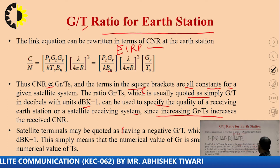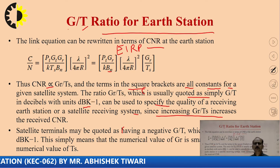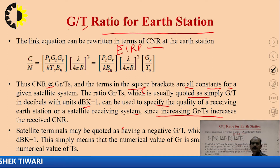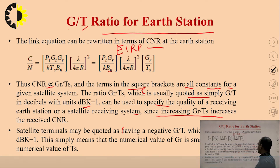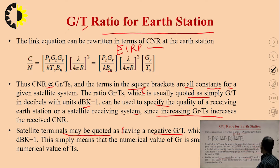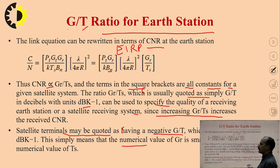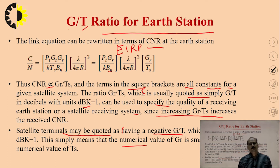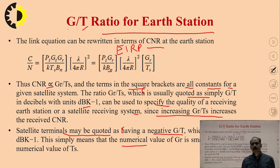Since increasing G/T increases the received CNR, this shows the relationship between G/T ratio and CNR — if G/T ratio increases, the received CNR also increases. A satellite terminal may be quoted as having a negative G/T, which is below 0 dB/K; this simply means the numerical value of GR is smaller than the numerical value of TS. So G/T ratio is the final equation for designing the earth station, directly relating the carrier-to-noise ratio with gain and system temperature.